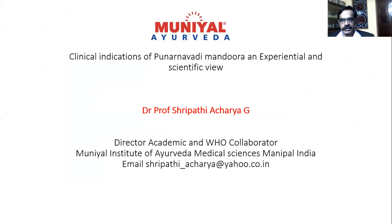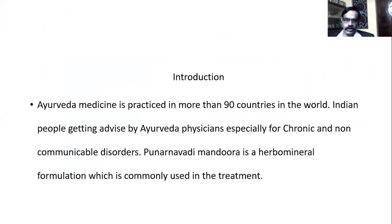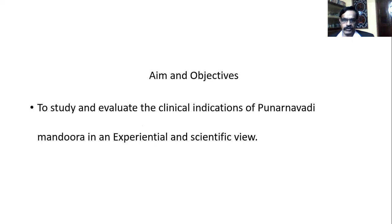The topic is 'Clinical Indications of Punarnavadi Mandura: An Experiential and Scientific View.' Punarnavadi Mandura is a Kharliya Rasayana Yoga. It is useful as a hematonic, diuretic, and also in jaundice and Jalodara patients. It is effective as a diuretic, hematonic, and Rasayana. Ayurveda medicine is practiced in more than 30 to 90 countries in the world, and Indian people seek advice from Ayurveda physicians especially for chronic and non-communicable disorders. Punarnavadi Mandura is a herbomineral formulation commonly used in treatment.